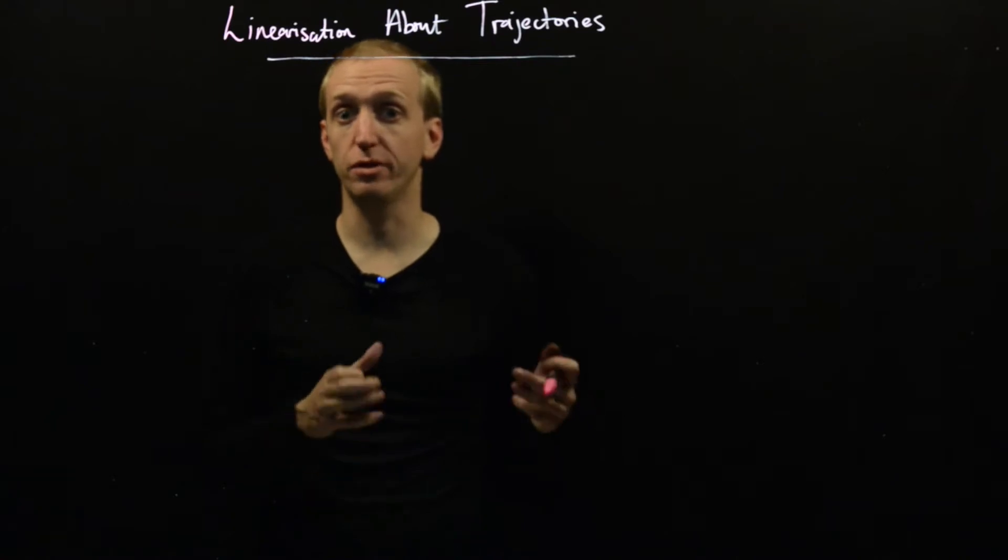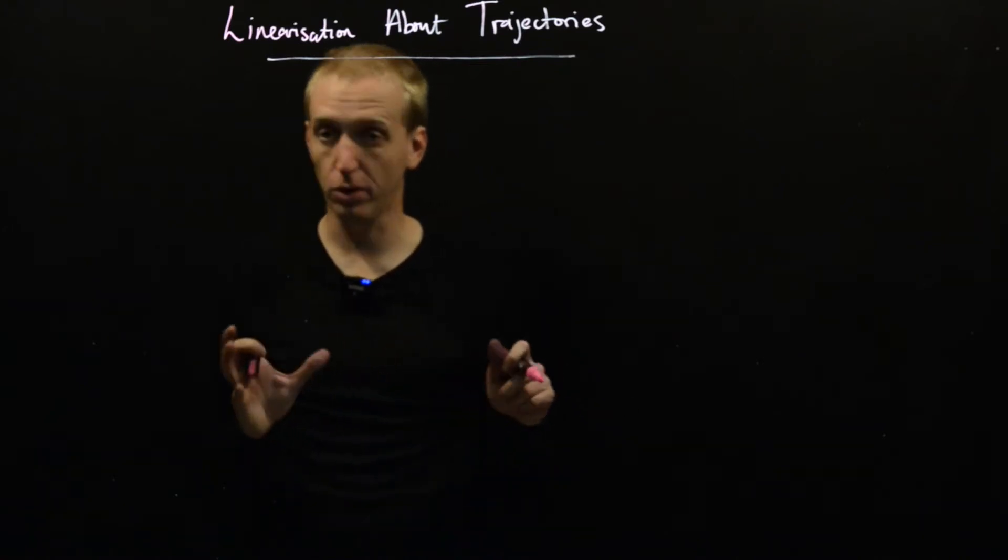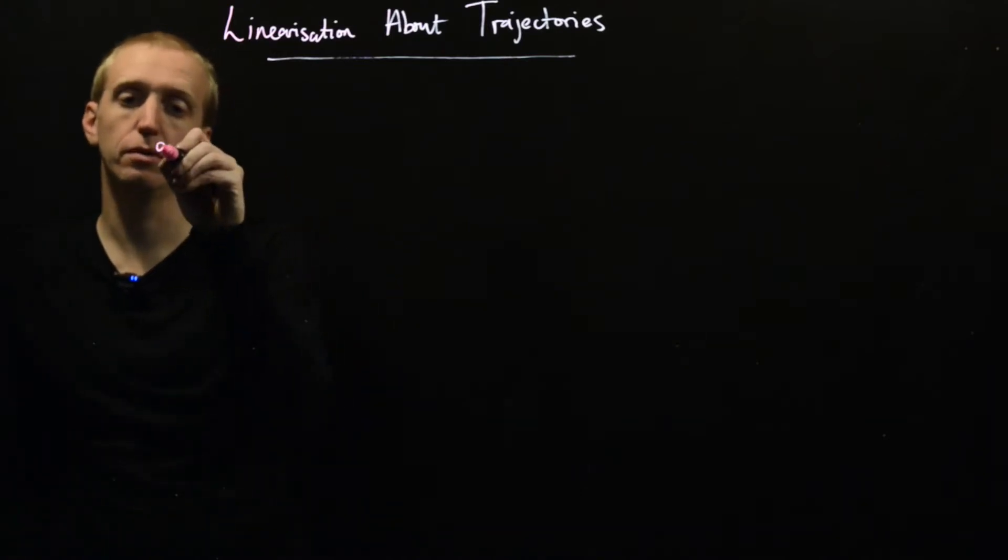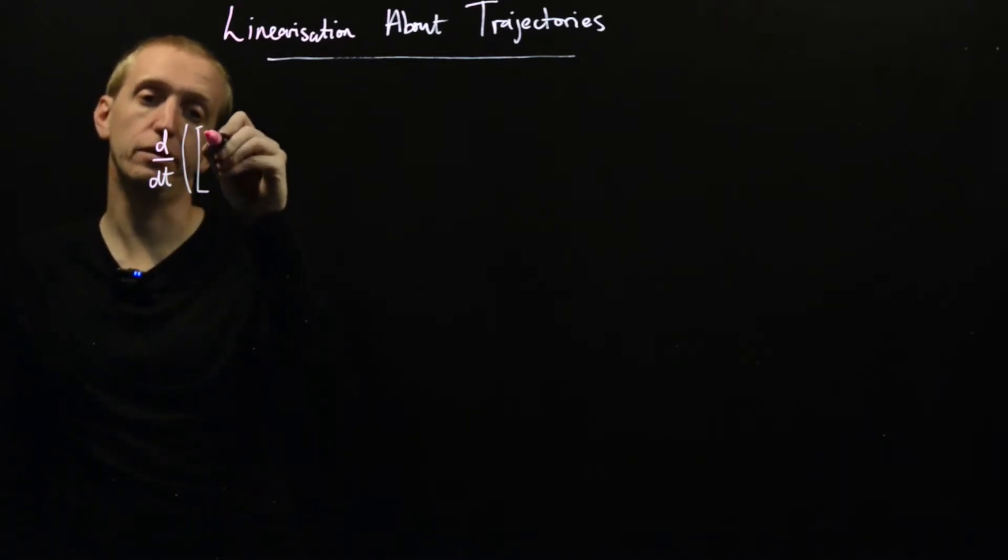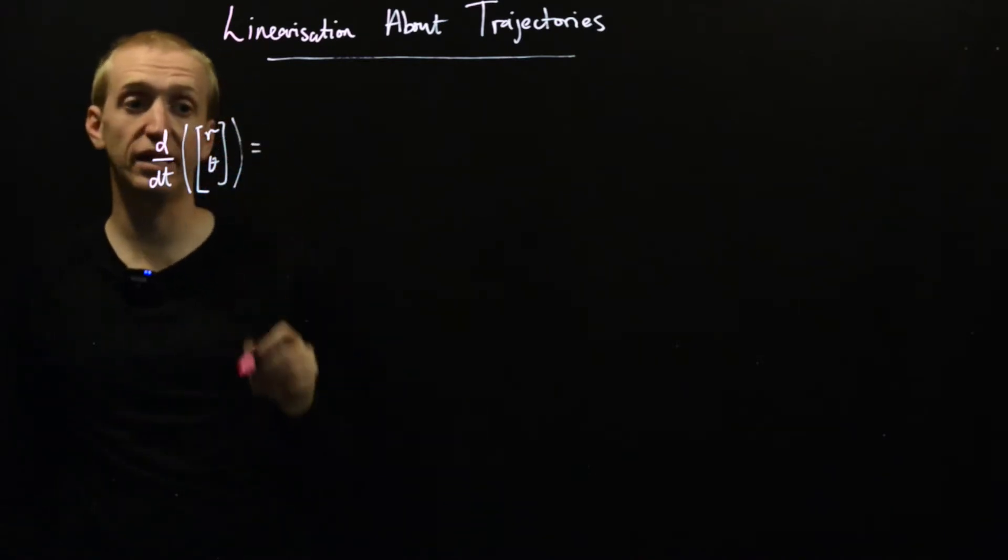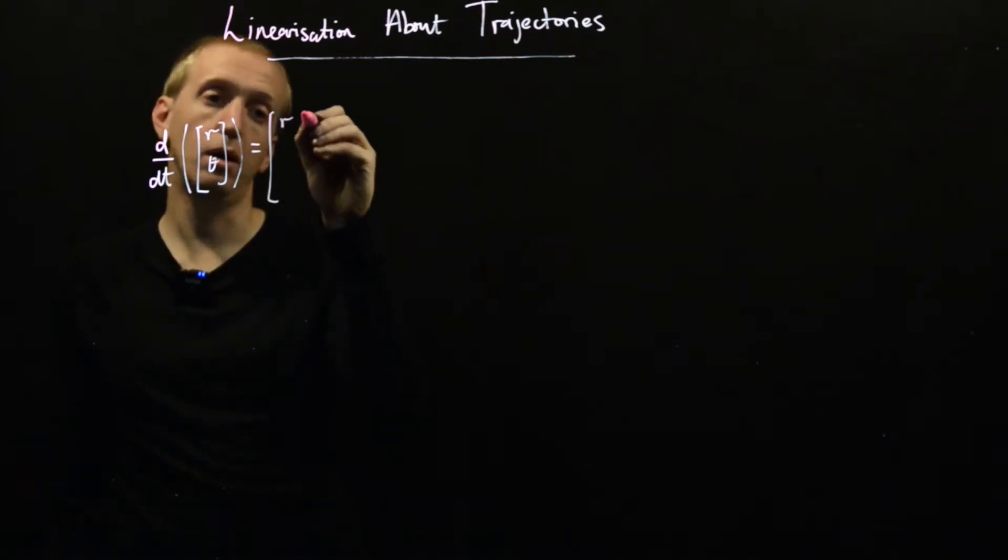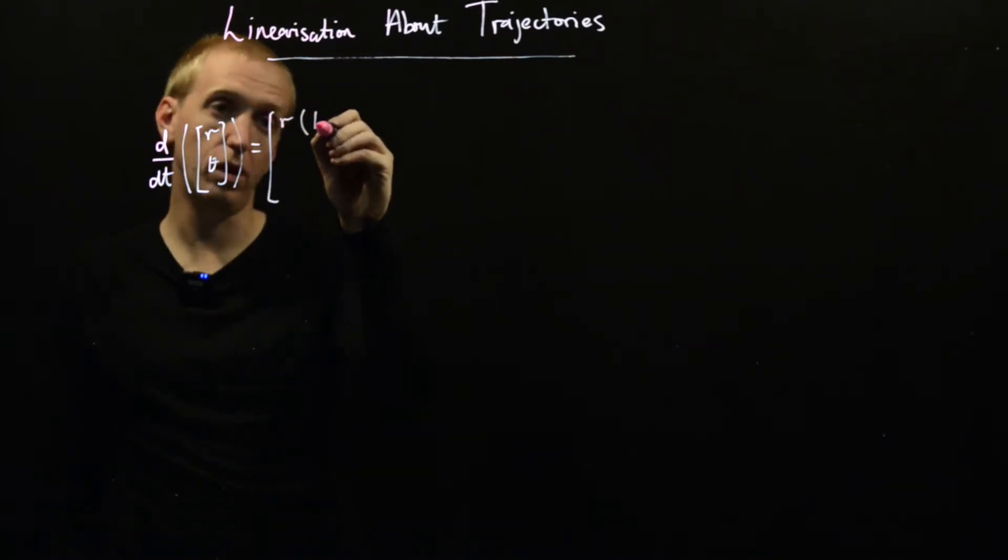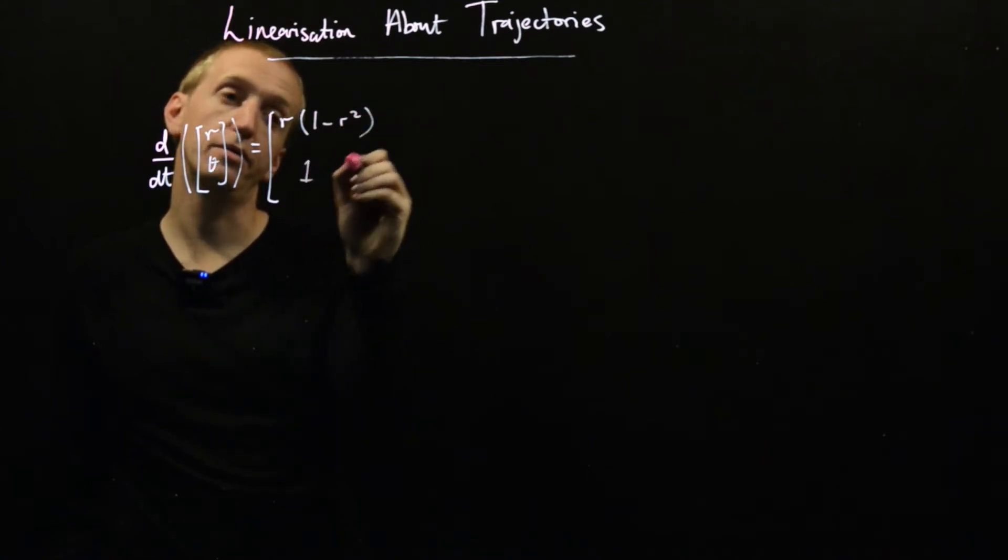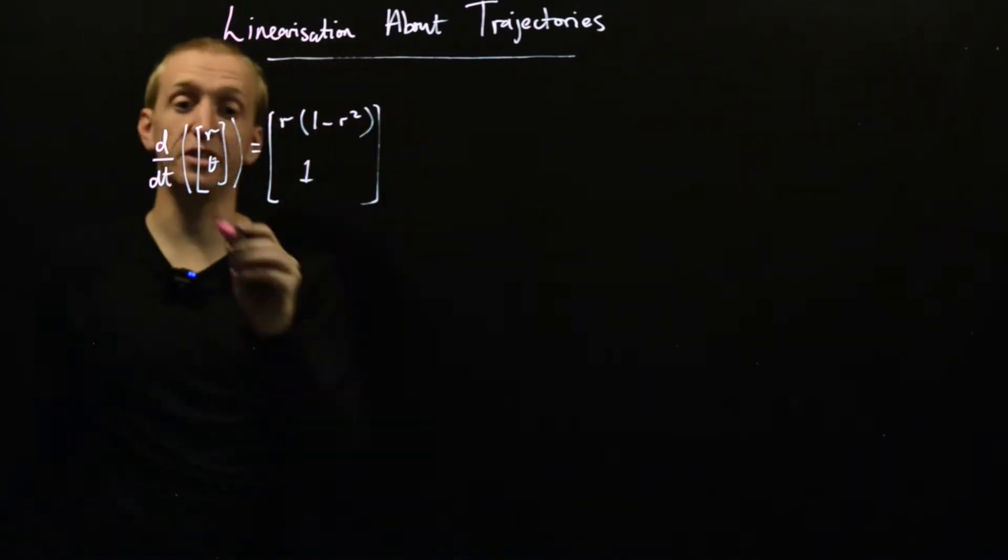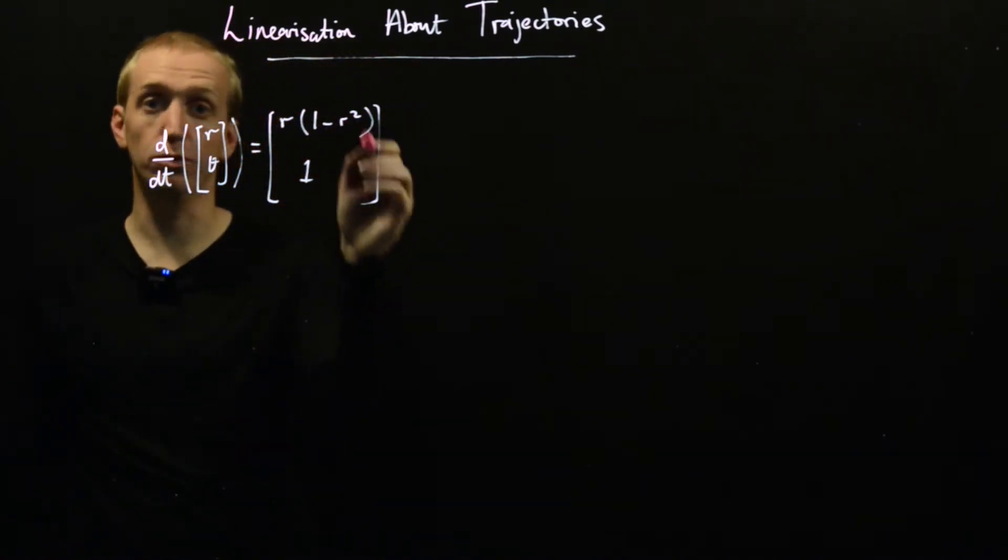This time we're going to do the linearization around the trajectory for the following two-dimensional system written in polar coordinates. We've got a system in polar coordinates r and theta, so d/dt of our state is equal to r times (1 minus r squared), and theta dot just equals 1.